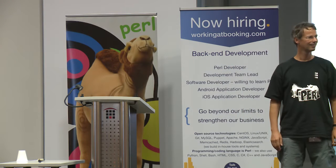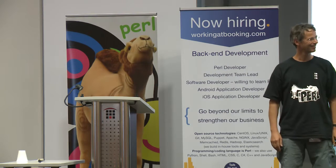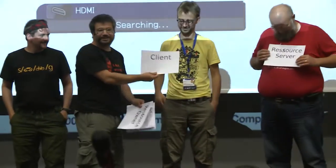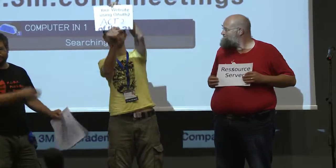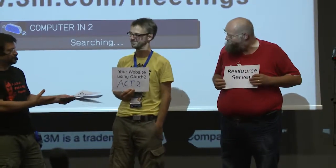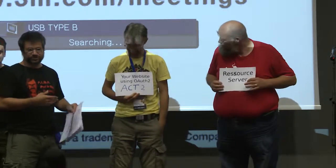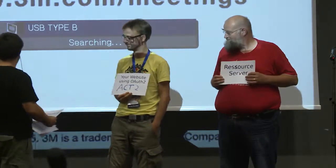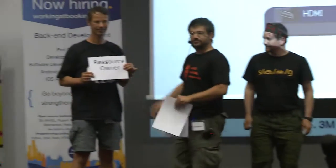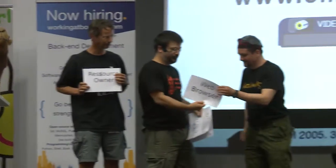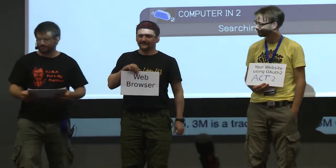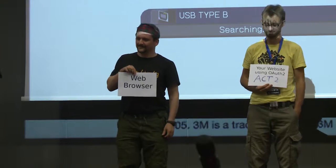We have a few things here. We have a resource server — that would be something like Google, Facebook, or Twitter, a big service everybody knows. We have something called a client, which is a bit confusing because it's actually a web server or a website — like your website using OAuth2, for example a fictional ACT2 instance. Then we have a resource owner, which is an actual person doing stuff. And in between we have a user agent, a web browser that will act on behalf of the different people.